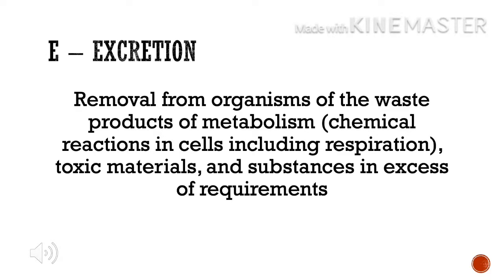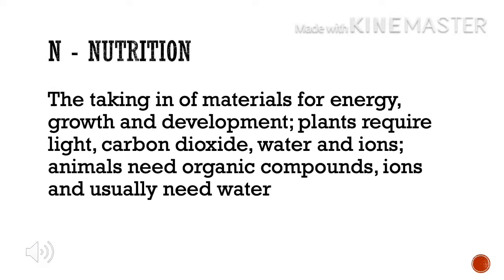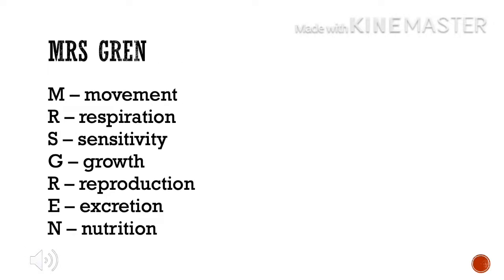N for nutrition: the taking in of materials for energy, growth and development. Plants require light, carbon dioxide, water and ions. Animals need organic compounds, ions and usually water. And those are the seven characteristics of living organisms.